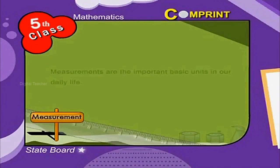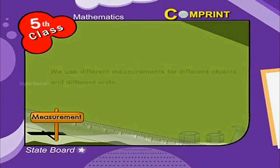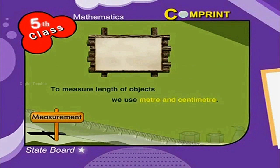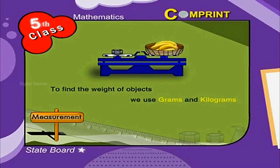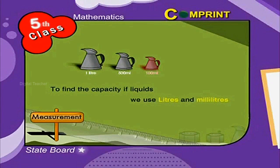Measurements are the important basic units in our daily life. We use different measurements for different objects and different units. For example, to measure the length of objects, we use meter and centimeter. To find the weight of objects, we use grams and kilograms. To find the capacity of liquids, we use liters and milliliters.